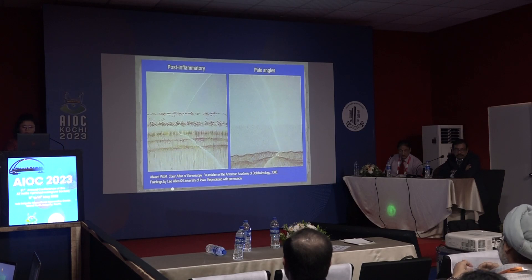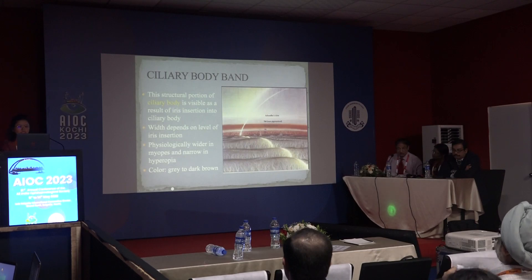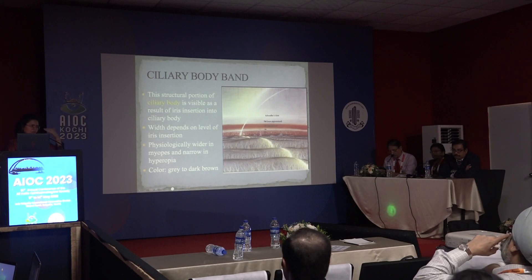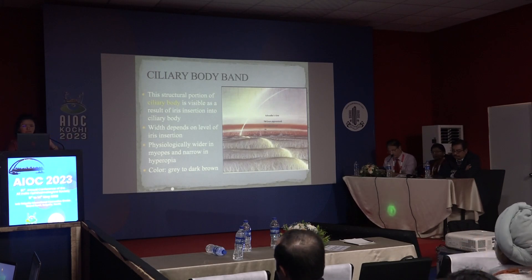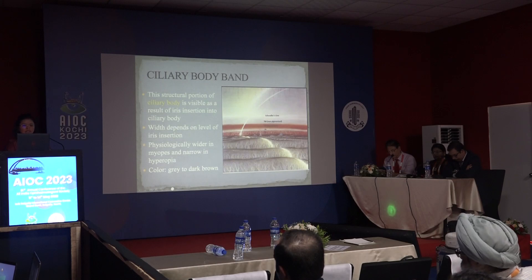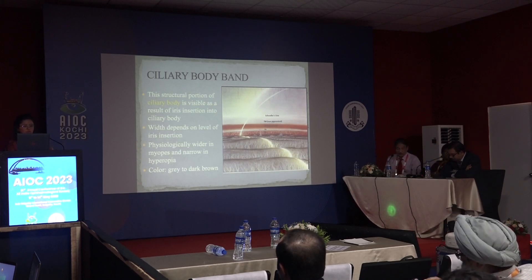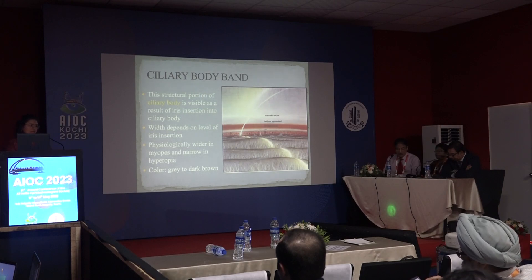During gonioscopy, we go from anterior to posterior. The first structure is the root of the iris, followed by the ciliary body band, which is brownish to dark brownish in our population. The ciliary body band results from the insertion of the iris into the ciliary body. Physiologically, it is wider in myopes and narrower in hyperopes.